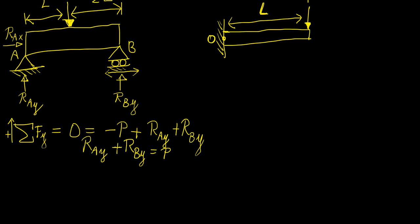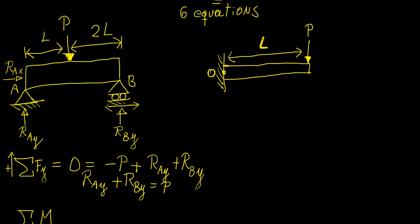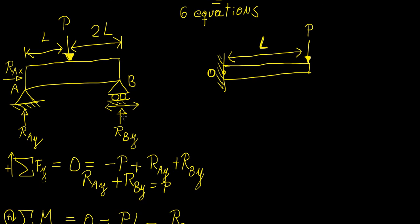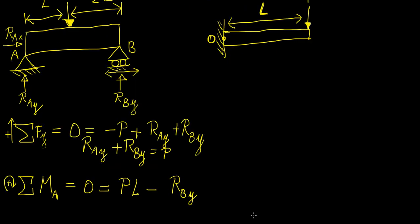That equation can come in the form of a moment equation. Let's take the sum of the moments about point A. We can select a point that lies exactly above one of these forces so that the moments about that point given by that force are zero. Choosing counterclockwise as positive, we have P times the perpendicular distance L, minus RBy times the distance 3L. So we get P·L - RBy·3L = 0.